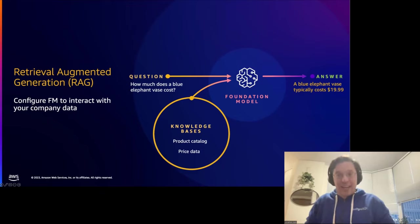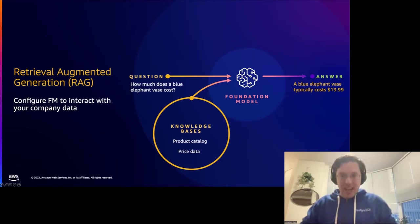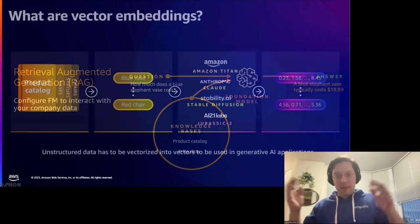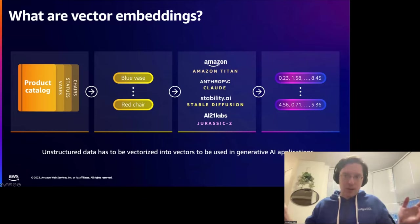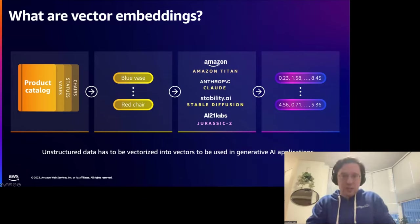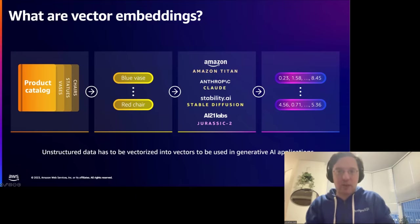This is really cool because it extends what a foundational model can answer, and you can use the information already in your database to do it. The next question is: how do you combine the two? How do you take the information in your database to augment these foundational models? The answer lies with something called a vector embedding. From an academic perspective there are many ways to do this, but being database folks, we typically want the most efficient way.